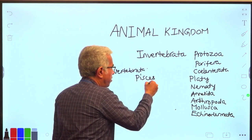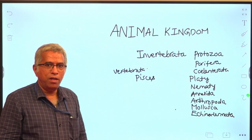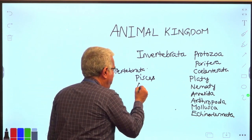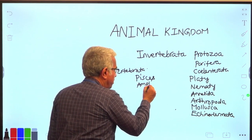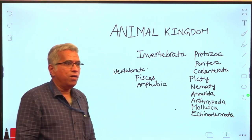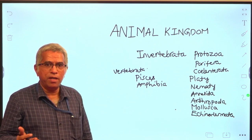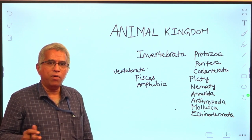This includes fishes, pisces. Pisces means fishes in which fins are the locomotory organs. After that, amphibians, amphibia. Best example is a frog. They exhibit dual mode of life. They lead both terrestrial life and aquatic life.